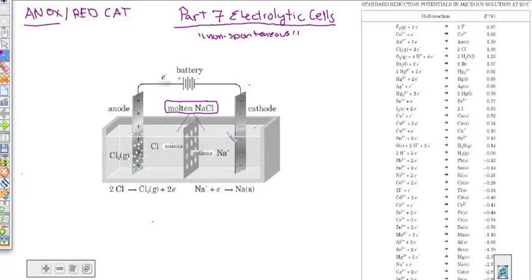On the other side, on the cathode side, the REDCAT. At the cathode side, it's going to be a reduction is going to happen, where these positives are going to gain an electron right here. And that's going to turn them into solid sodium.